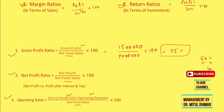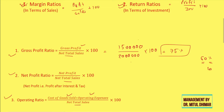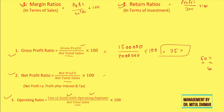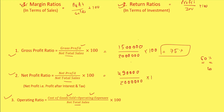For net profit ratio, I need net profit — that is profit after interest and tax — which is given in the income statement as 4 lakh 90,000 rupees. Sales is 20 lakh rupees. So 4 lakh 90,000 divided by 20 lakh into 100 gives a net profit ratio of 24.5%.